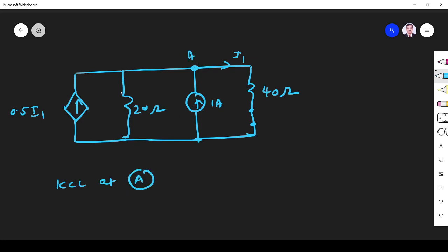Okay, so I write KCL at A. So what is the incoming current? This current is going here. So 0.5 I1. Plus this 1 ampere is also going, 1 ampere. What about the outgoing current? I, that is nothing but this I1 is outgoing current. I1 plus, let us assume here the voltage is, this voltage only I have to find. So I1 is equal to V by 20 for this branch. This is outgoing. These two are incoming. So incoming current is equal to outgoing current.